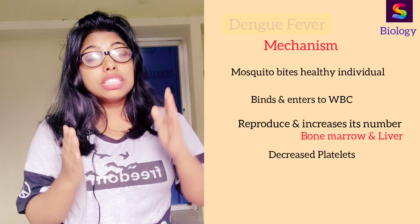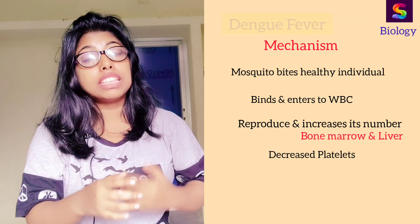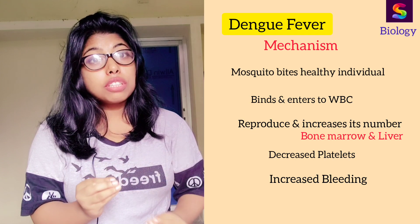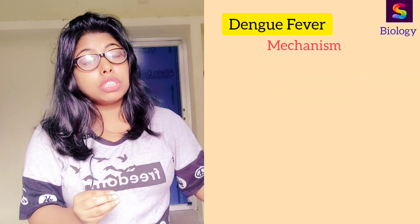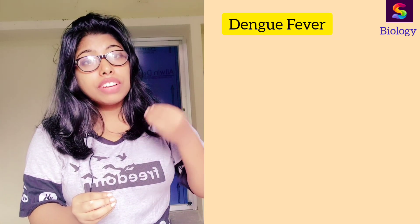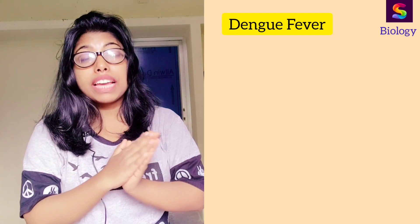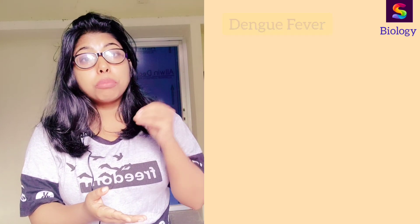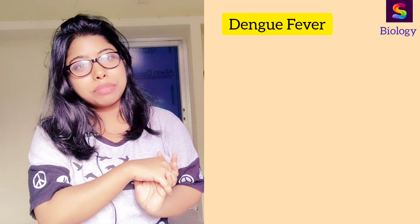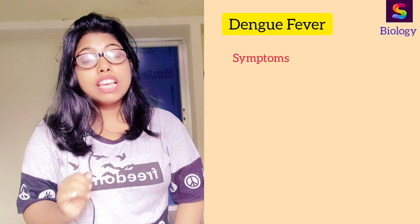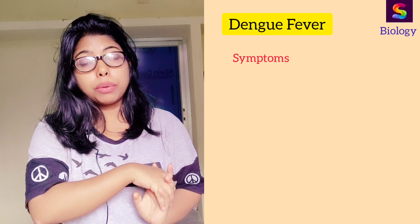Platelets help in blood clotting in our body — if you are injured anywhere, clotting happens quickly because of platelets. If platelet production decreases, clotting will also decrease, and as a result bleeding will increase. This is the most dangerous outcome. The entire mechanism is caused by that mosquito — the Aedes aegypti. Dysfunction of the bone marrow causes reduction of platelets and an increase in bleeding.